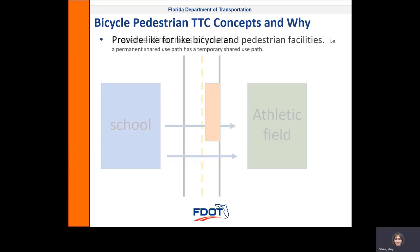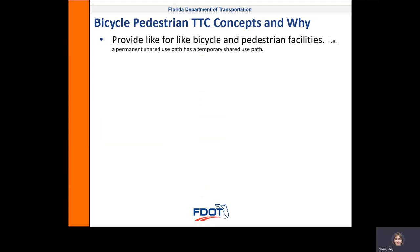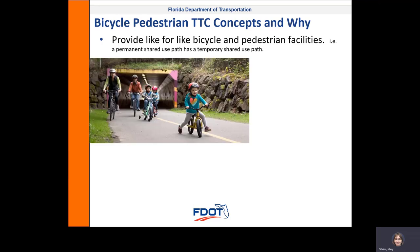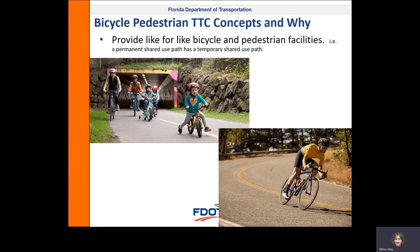The next concept is to provide like-for-like bicycle and pedestrian facilities. For example, a permanent shared use path would have a temporary shared use path. The reason for that is shared use paths and separated bike lanes attract a different type of person biking than an on-street bike lane or a paved shoulder does. A family might be comfortable biking to a local park on a shared use path but not taking kids onto the road. That family may come through during construction and we want to provide them the type of facility they are expecting and can stay safe on.